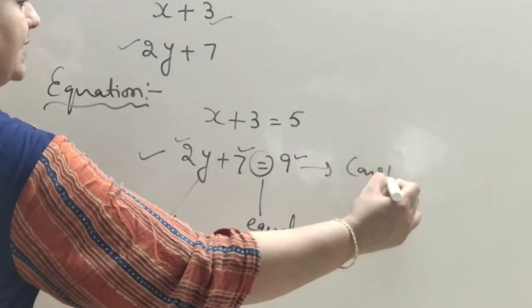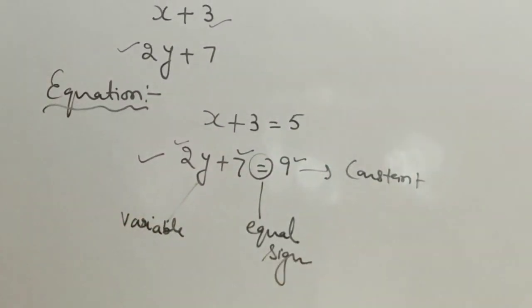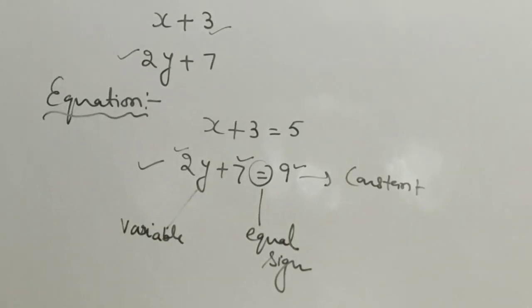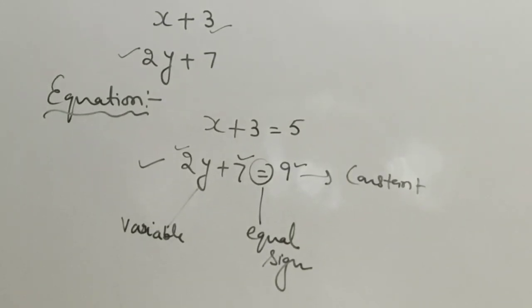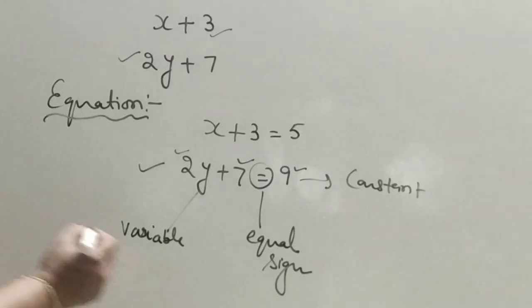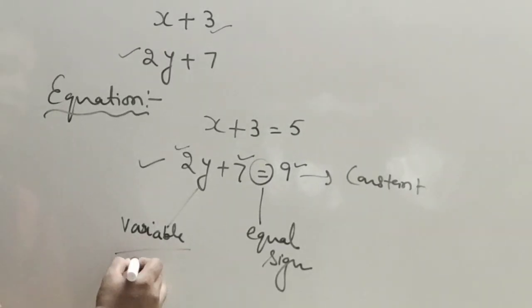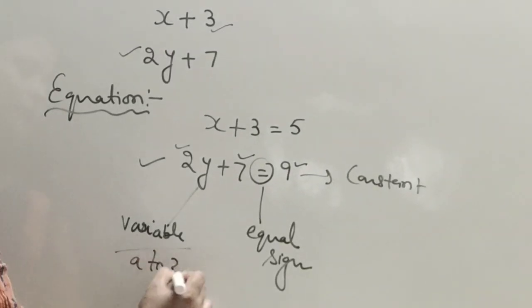In these expressions, 2, 7, and 9 are constants. Constants have a fixed value. Variables, represented by alphabets A to Z, do not have a fixed value.